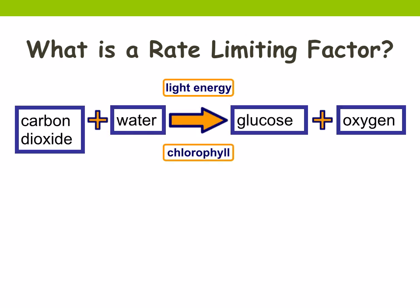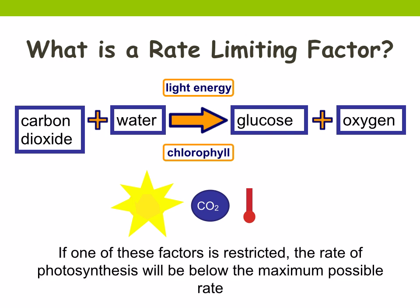Now let's look at rate-limiting factors in photosynthesis. Remember the equation: carbon dioxide plus water, in the presence of light energy and chlorophyll, produces glucose and oxygen. Photosynthesis is a chemical reaction, so it has a rate. The ideal combination for the maximum rate would be enough light, enough carbon dioxide, and ideal temperatures. If one of these factors is restricted, the rate of photosynthesis will be below the maximum possible rate.